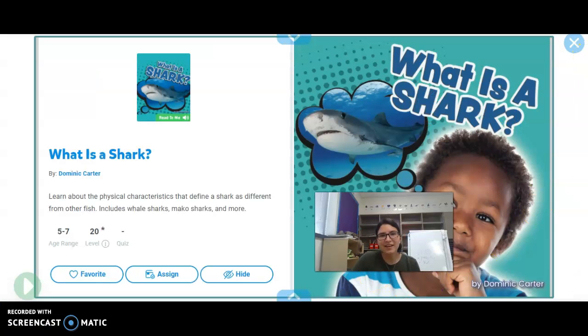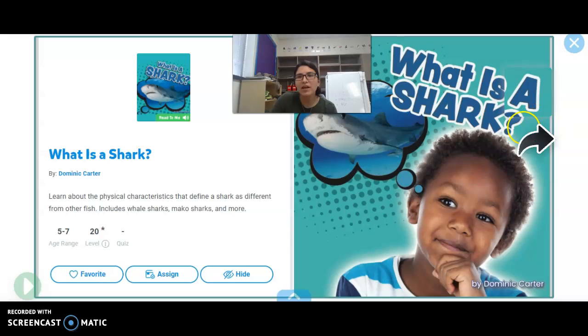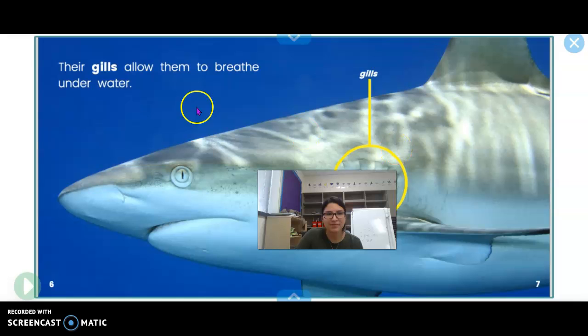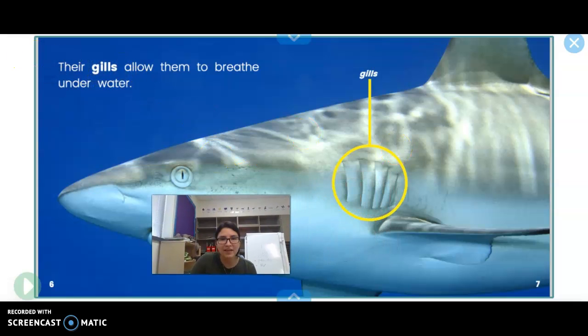Hi there. So here I have this book titled, What is a Shark? Notice this bigger text. It's standing out from the rest of the text. Right here again, bigger text. Here is a bold word, gills. And then here is a label. This is another way a label can be presented. See how here's the word, and then here's a line with the circle showing us, the reader, what a gill is.